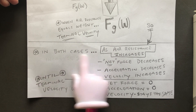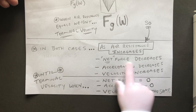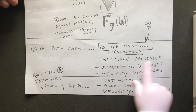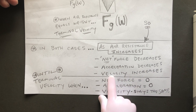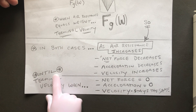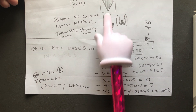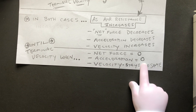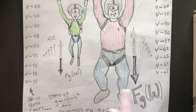To summarize: in both cases, as air resistance increases, the net force decreases, and the rate of acceleration would also decrease while velocity increases, until they reach terminal velocity. When they reach terminal velocity, the net force equals zero, the rate of acceleration is zero, and the velocity stays the same.